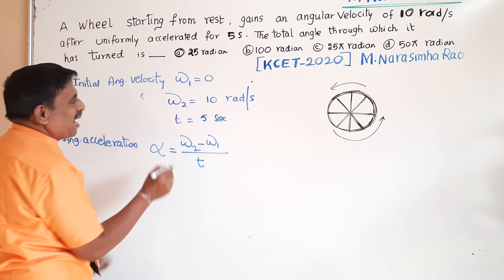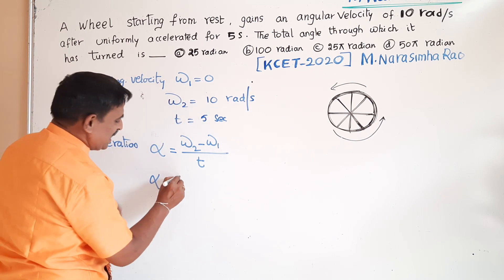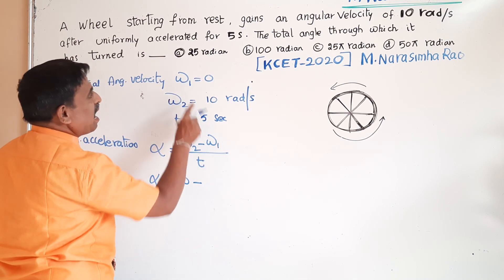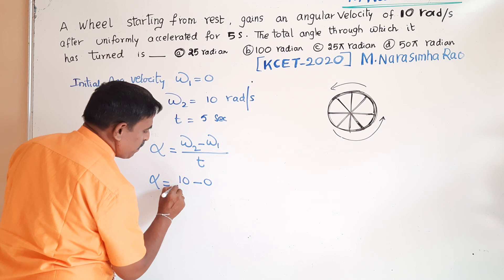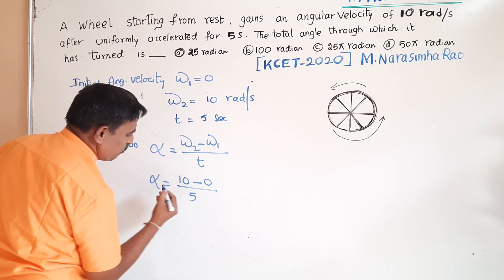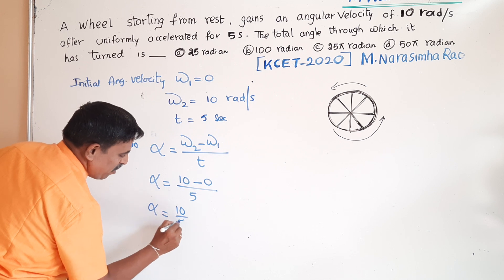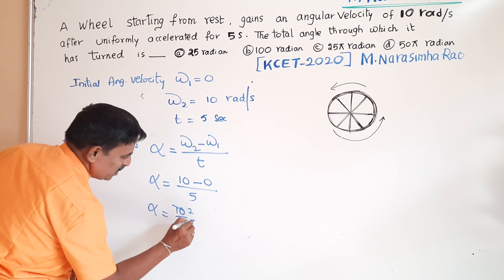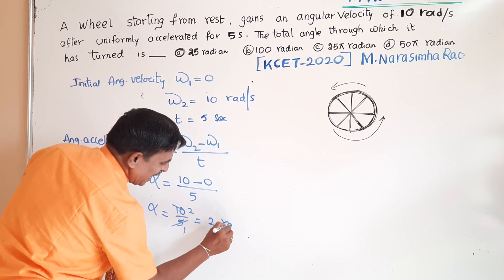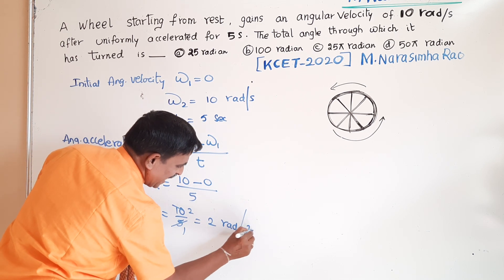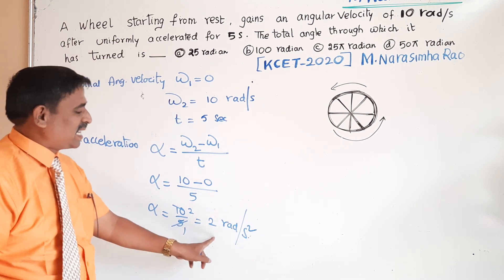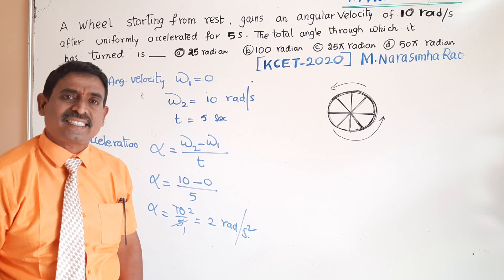Alpha is equal to omega 2, omega 2 is 10, omega 1 is 0 starting from rest. Time taken: 10 minus 0, 10 by 5 is 2 radian per second square. Alpha angular acceleration is 2 radian per second square.